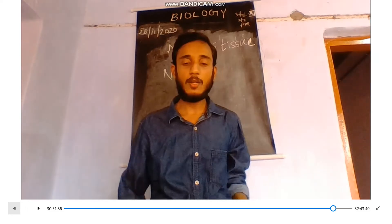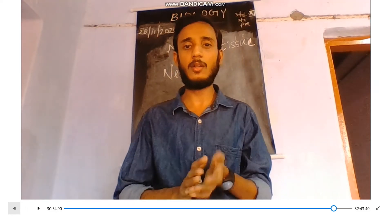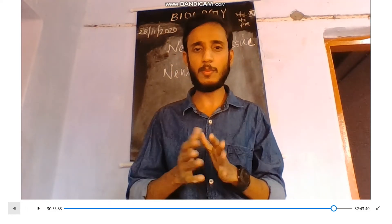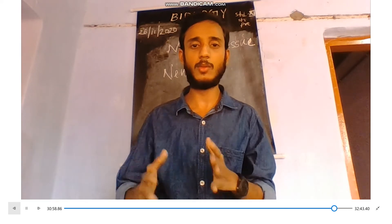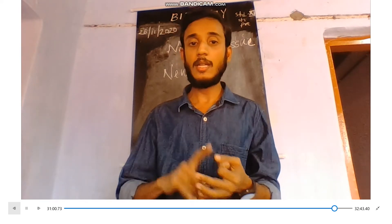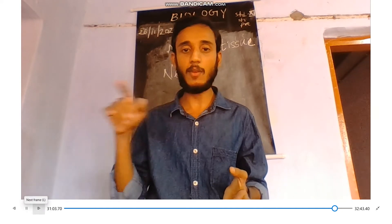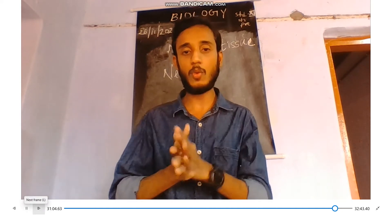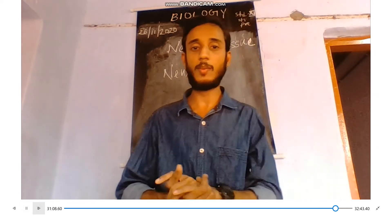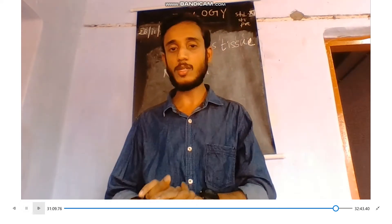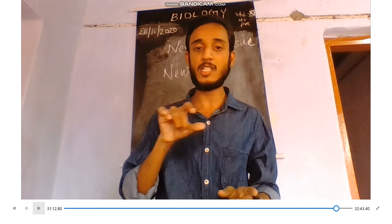A neuron is a cell that has several parts: dendrons and axons, dendrites and axons, nucleus, and myelin sheath covering. Neurons transmit message impulses in the transmission.